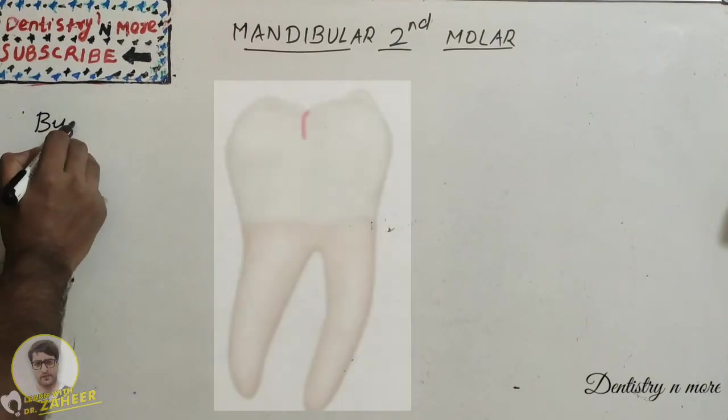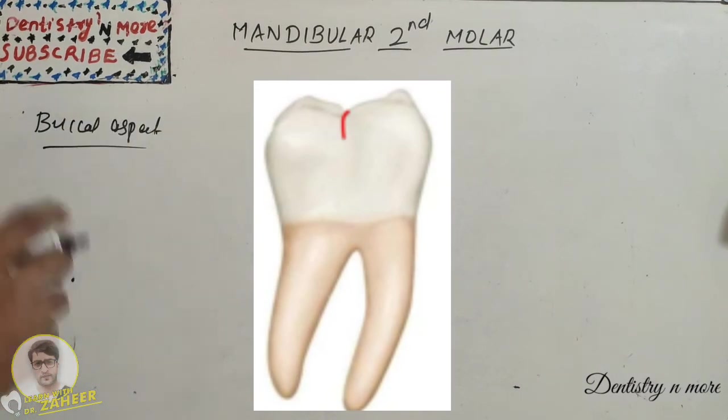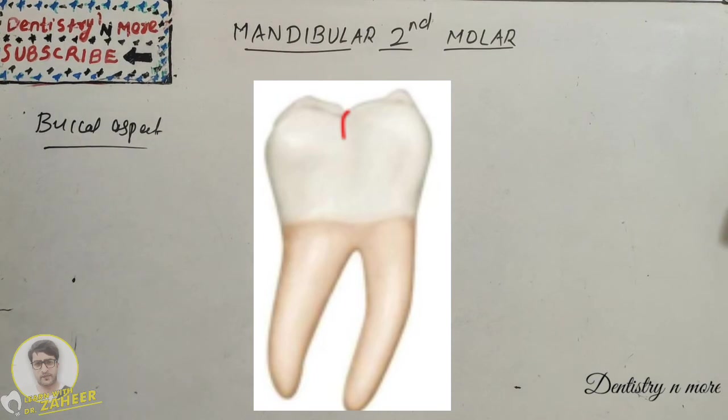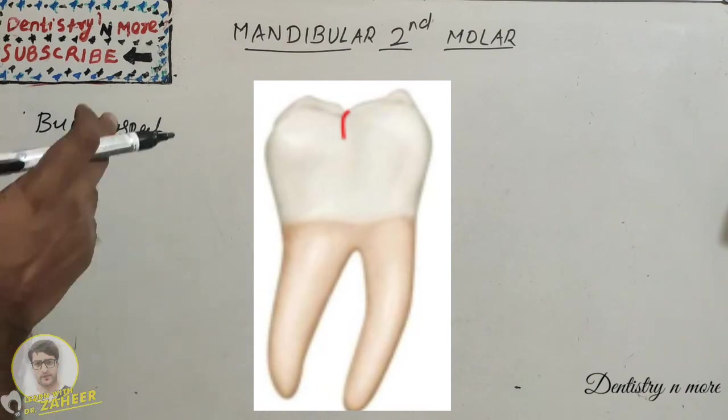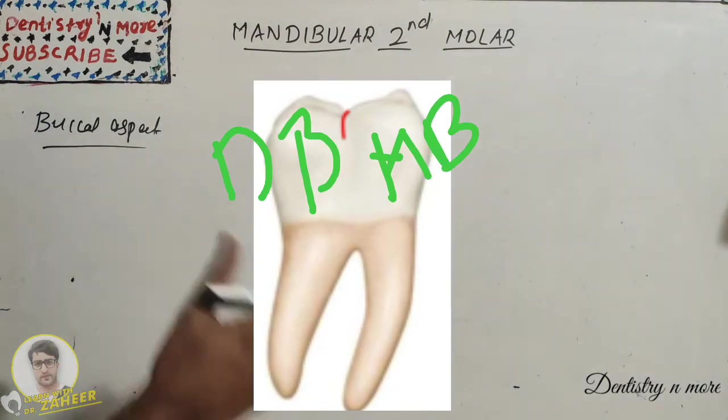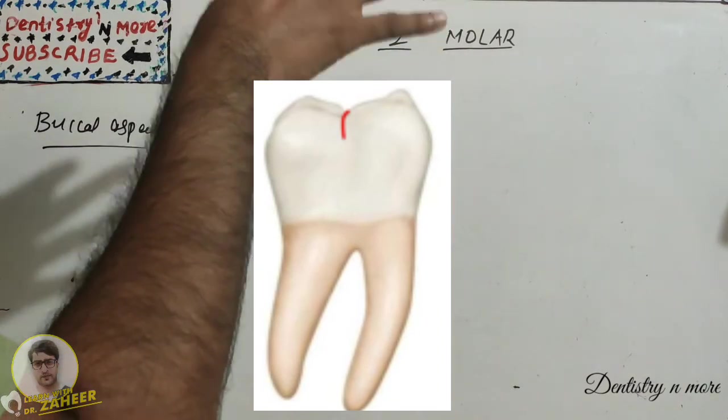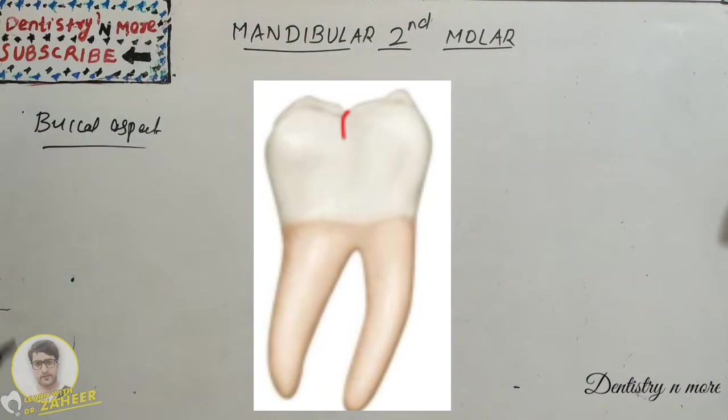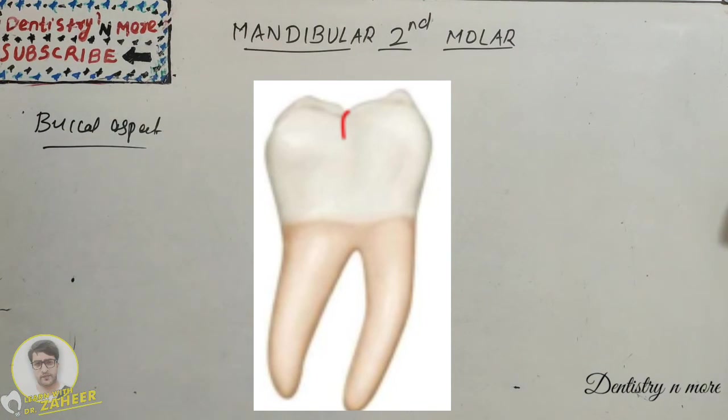We'll start with our buccal side or buccal aspect. The picture you can easily make out the crown is shorter and narrower mesiodistally than the first molar. There is one developmental groove which divides the mesiobuccal and distobuccal cusp which are almost equal in size. In first molar we have a larger mesiolingual, then the mesiobuccal, then finally the distal. But this is mesiobuccal and distobuccal are almost same. There are two roots, mesial and distal, and are less broader and they're more close together.